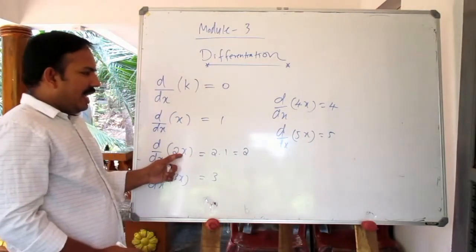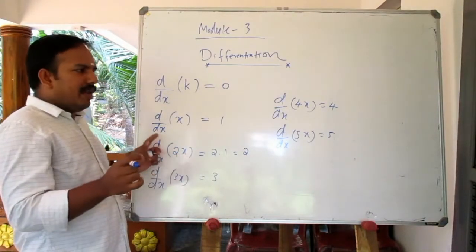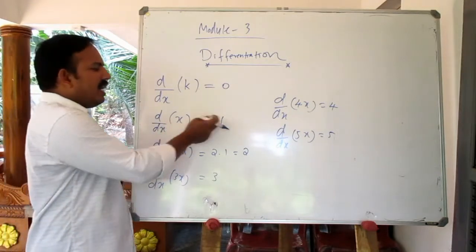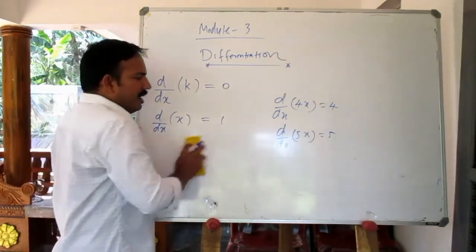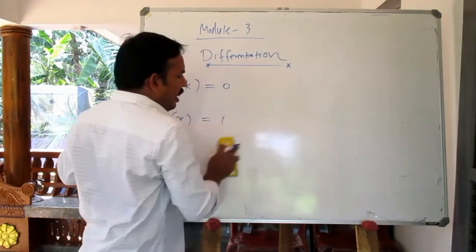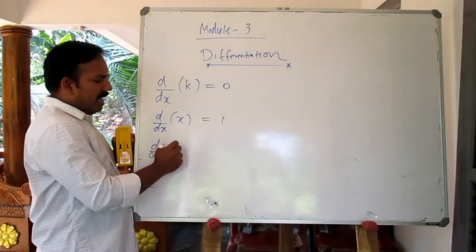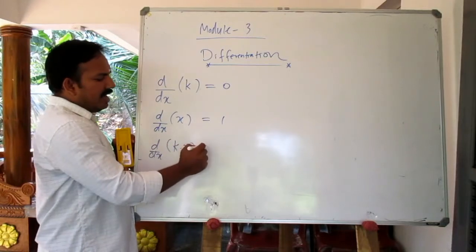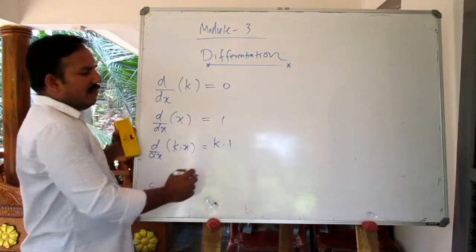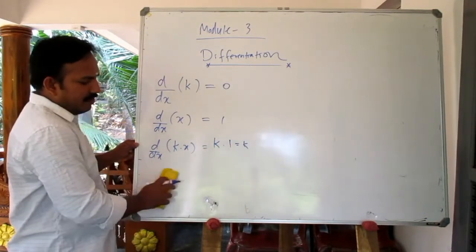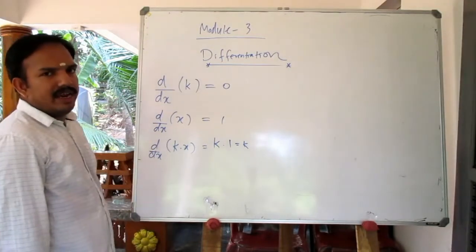So, for any expression kx, the constant coefficient k comes out: d by dx of kx equals k, because the derivative of x is 1. Therefore d by dx of x equals 1.